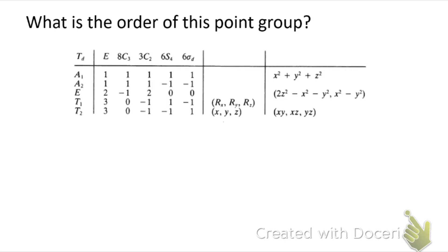What is the order of the Td tetrahedral point group? We can find the order by adding up the total number of operations: one E plus eight C3s plus three C2s plus six S4s plus six sigma-d's, for a total order of twenty-four. We could also have gotten that by summing the squares of the dimensions — the numbers in the first column.